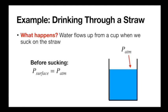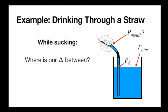Now the interesting part: we put our mouth on the straw and start sucking, and fluid flows up. To use Bernoulli's equation we need to pick our final and initial points. There's the surface of the water, the bottom of the straw, the height equal to the water level outside, and the end of the straw where it meets the mouth. I'll suggest using the surface of the water as our starting point — we know the pressure there is P_ATM — and the end of the straw at the mouth as our ending point, since that encapsulates the whole system.